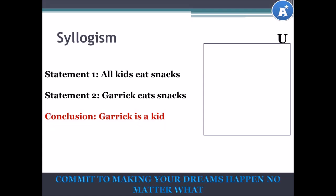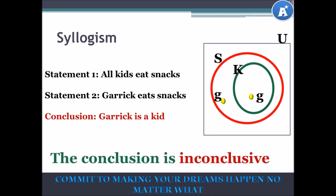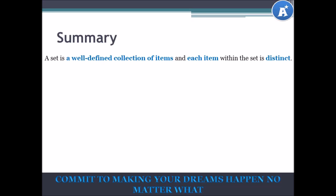Let's try another one. Statement 1: All kids eat snacks. Statement 2: Garrick eats snacks. Conclusion: Garrick is a kid. If we use set S to represent everyone who eats snacks, then kids who eat snacks lie within S. Where does Garrick go? If Garrick eats snacks, he can be a kid within K, or he can eat snacks and not be a kid — just lying within set S. So we cannot tell from the statements whether Garrick is a kid. Therefore, our conclusion is inconclusive. What you just learned is what we call syllogism in math.